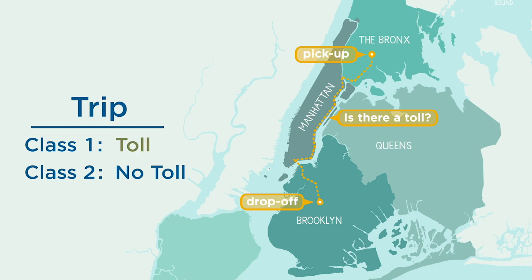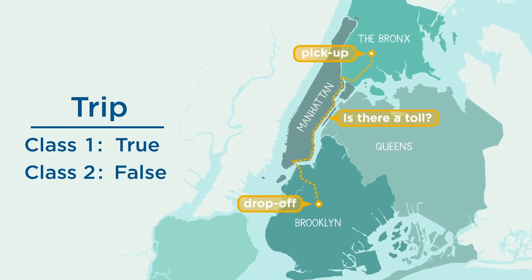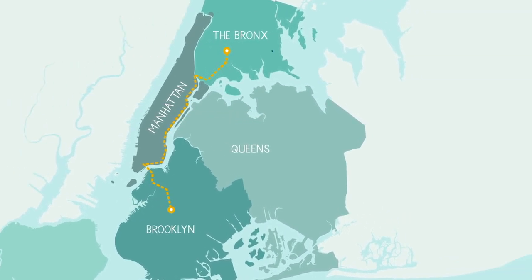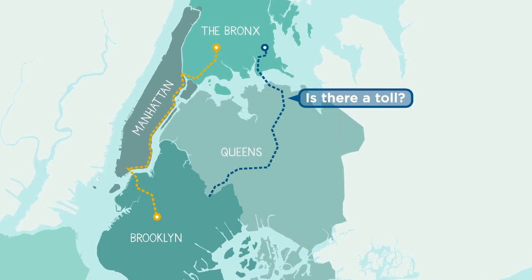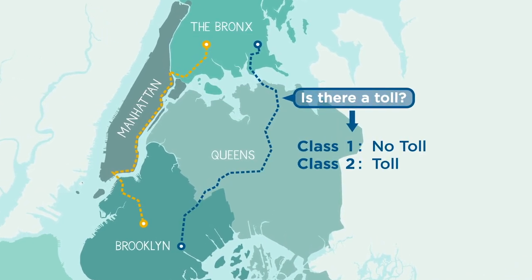You might use labels such as toll and no toll if you used categorical data, or you could use a logical true-false. Regardless of how you name the class labels and pick your variables, the goal with classification is to determine the class label for an unlabeled test case.